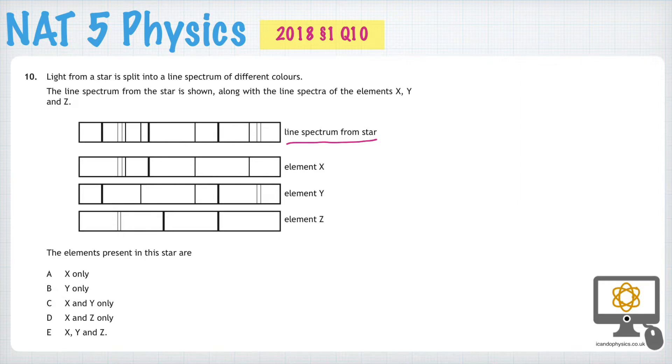Let's focus on the first one which is element X. To check whether element X is in the star, all we need to do is look at the lines that are in element X. We'll start from the right. This one here clearly lines up with that one, this one lines up with that one, the thicker one here lines up and these three lines here also line up. So element X is definitely in the star.